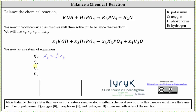Now let's look at the oxygen atoms. We have one atom of oxygen here, four atoms of oxygen here, four atoms of oxygen here, and one atom of oxygen here. This means x sub one times one plus four times x sub two must equal four times x sub three plus one times x sub four, or x sub one plus four x sub two equals four x sub three plus x sub four.